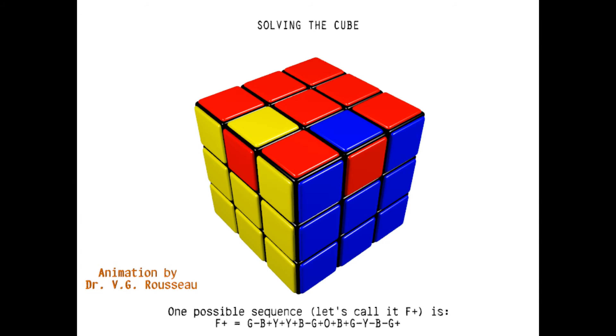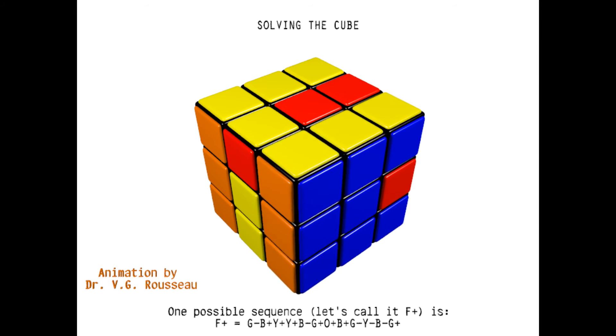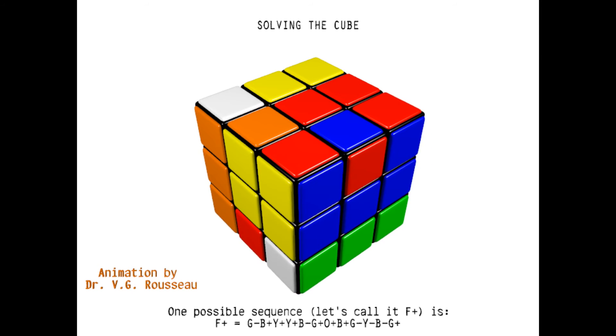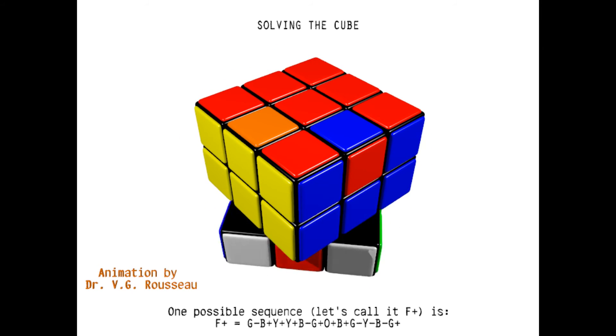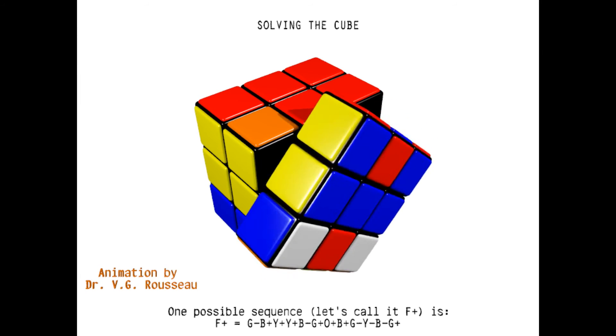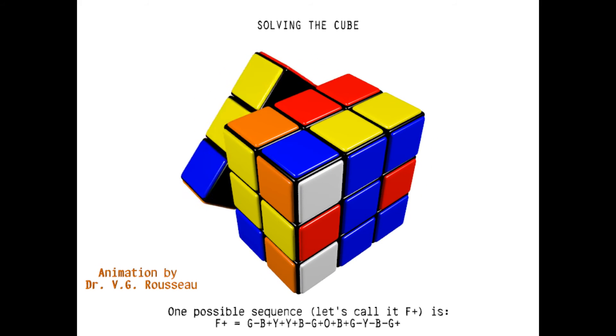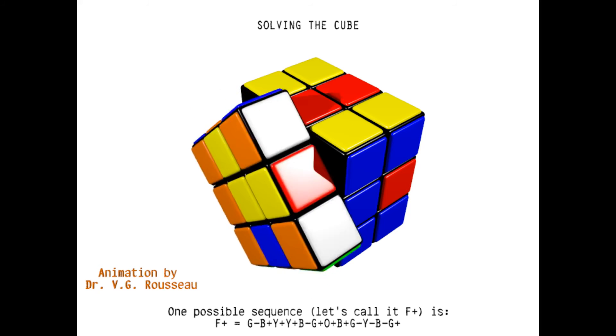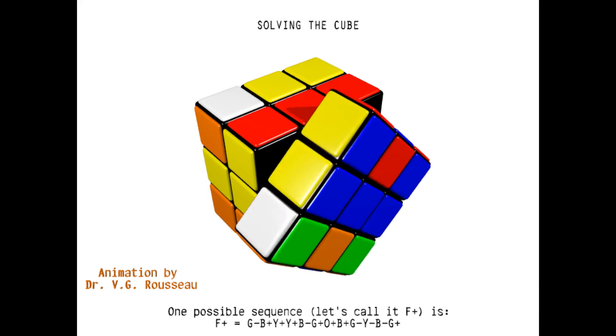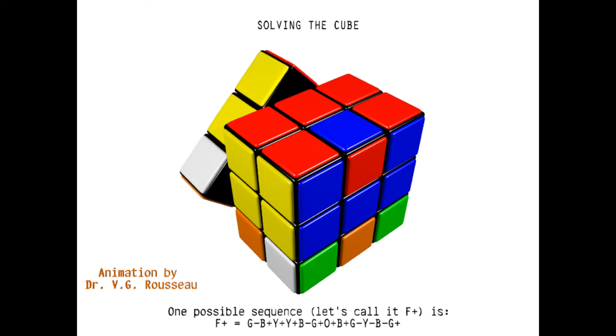The sequence is green negative, blue positive, yellow positive, yellow positive, blue negative, green positive, orange positive, blue positive, green negative, yellow negative, blue negative, green positive.